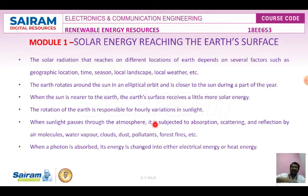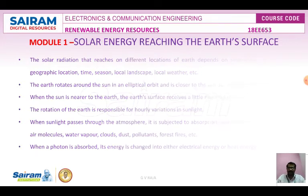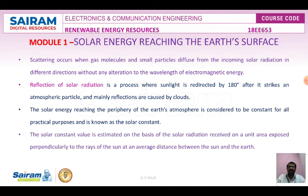When sunlight passes through the atmosphere it is subject to absorption, scattering, and reflection by air molecules, water vapor, clouds, dust materials, pollution, and forest fires. When photons are absorbed, the energy is changed into electrical energy or heat energy. Scattering occurs when gas molecules and small particles diffuse the incoming solar radiations in different directions without any alteration of the wavelength of the electromagnetic energy.